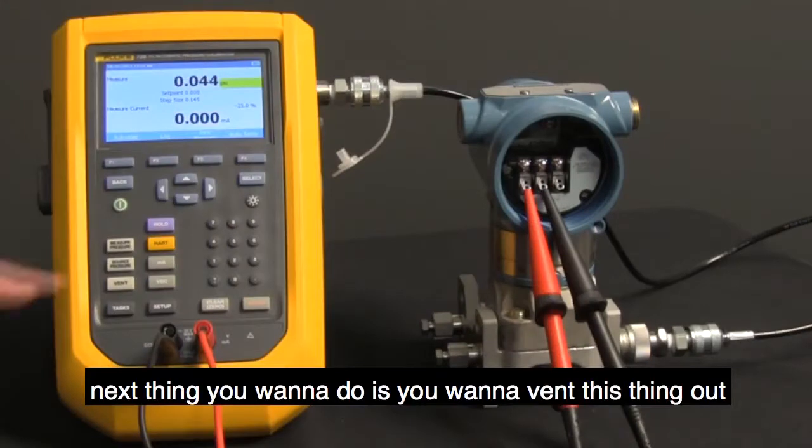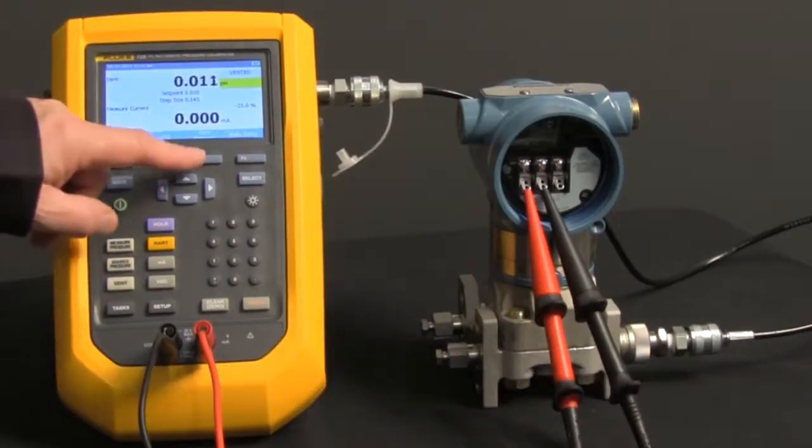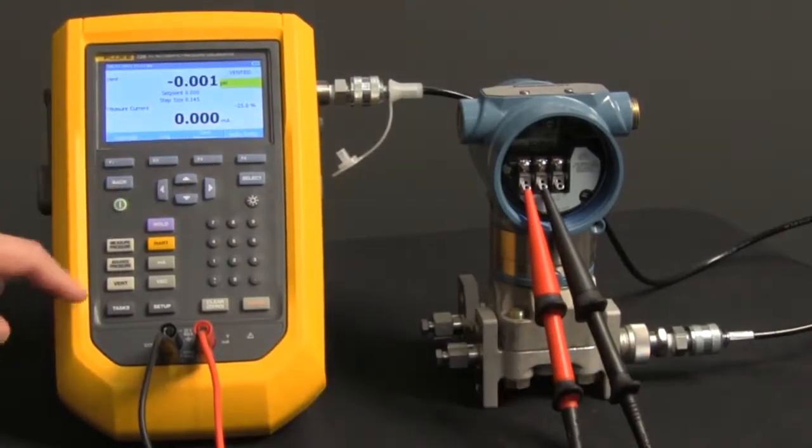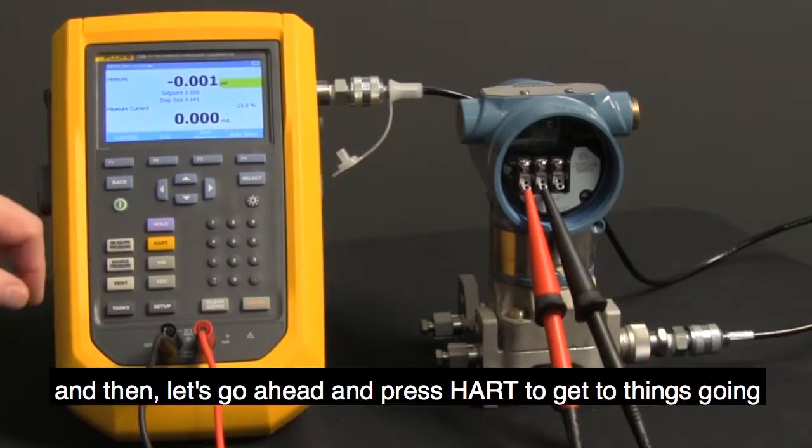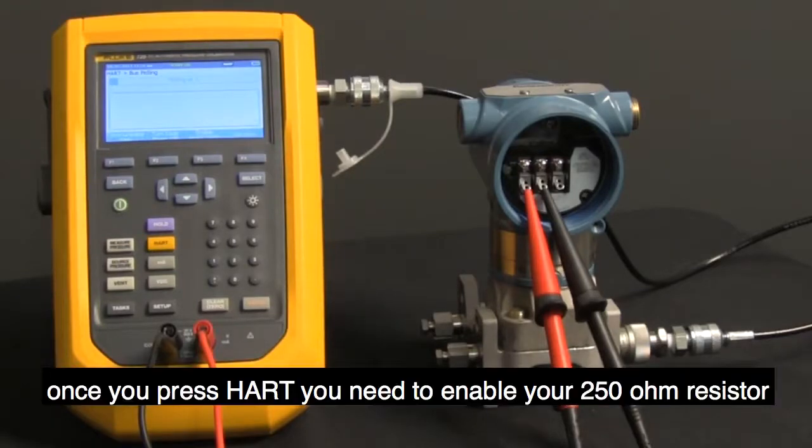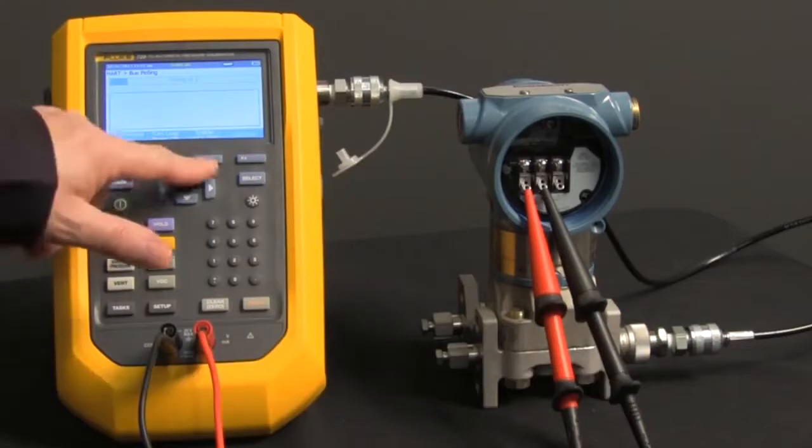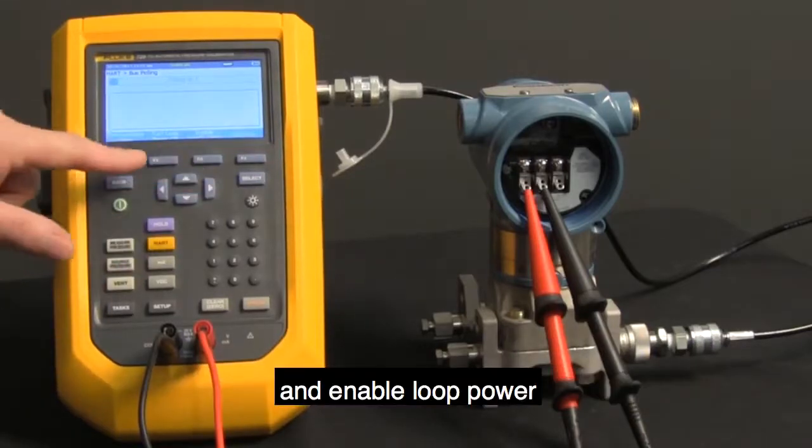Next thing you want to do is vent this thing out, zero your pressure, and then let's go ahead and press HART to get things going. Once you press HART, you need to enable your 250 ohm resistor and enable loop power.